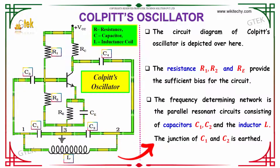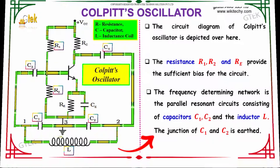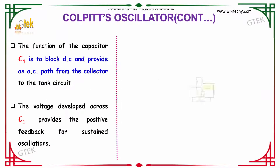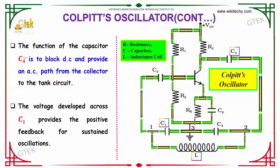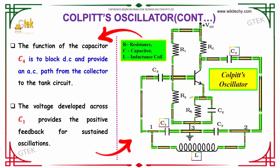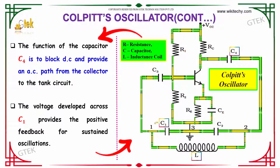The junction of C1 and C2 is grounded. The function of capacitor C4 is to block direct current and provide an AC path from the collector to the tank circuit. The voltage developed across C1 provides the positive feedback for sustained oscillation.